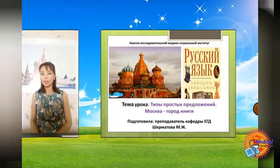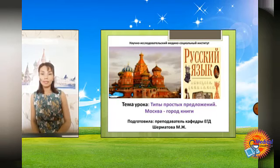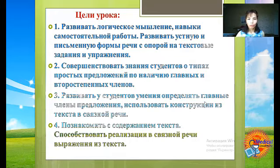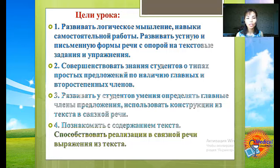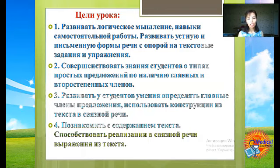Сегодня у нас новая тема. Называется она «Москва. Город книги» и типы простых предложений. Цели урока – развивать логическое мышление, навыки самостоятельной работы, развивать устную и письменную формы речи с опорой на текстовые задания и упражнения, совершенствовать знания студентов о типах простых предложений по наличию главных и второстепенных членов предложения, развивать умение определять главные члены предложения, использовать конструкции из текста в связной речи, познакомить с содержанием текста, способствовать реализации в связной речи выражений из текста.